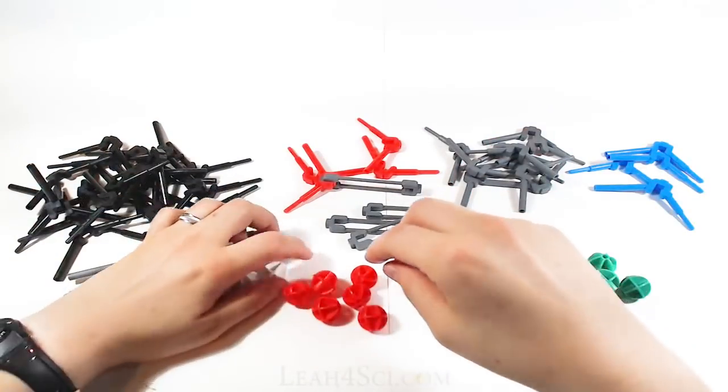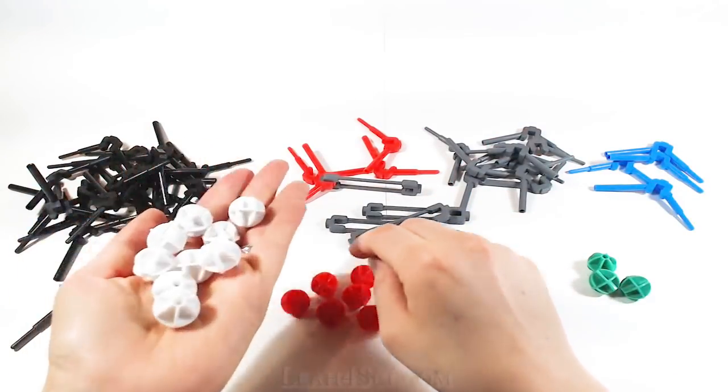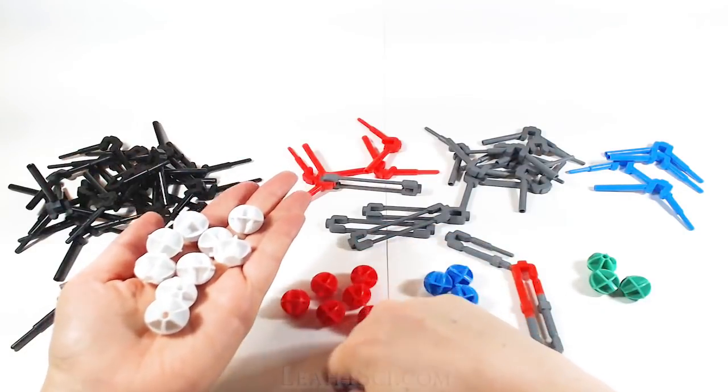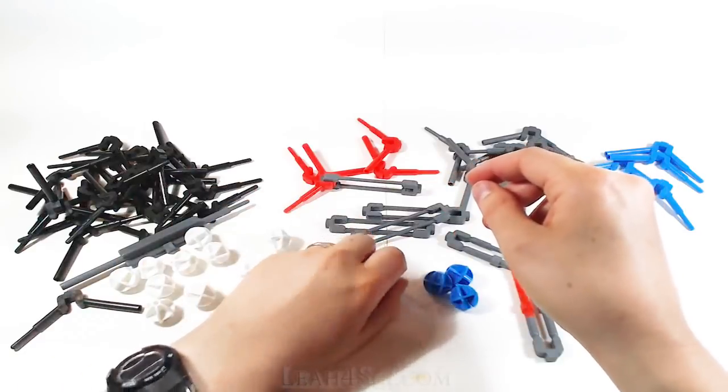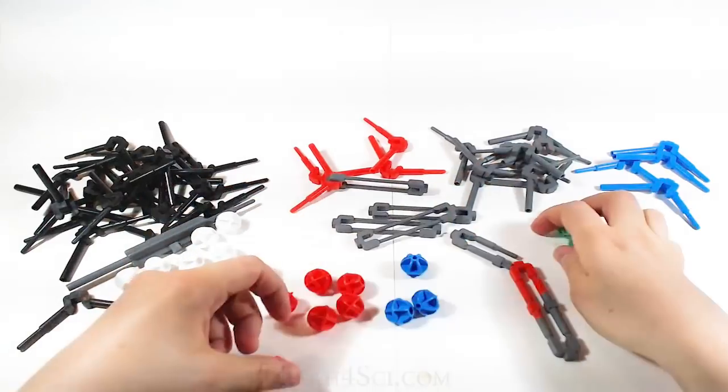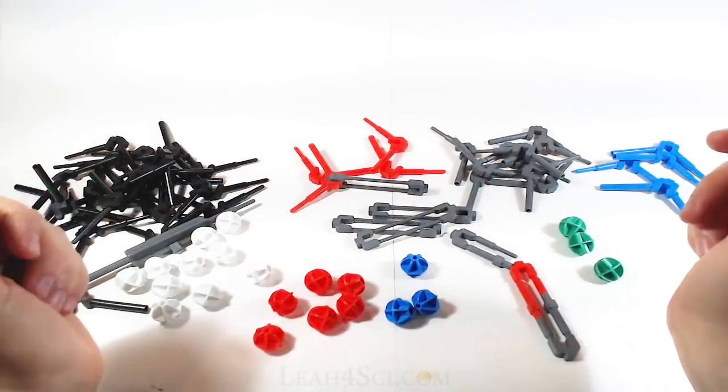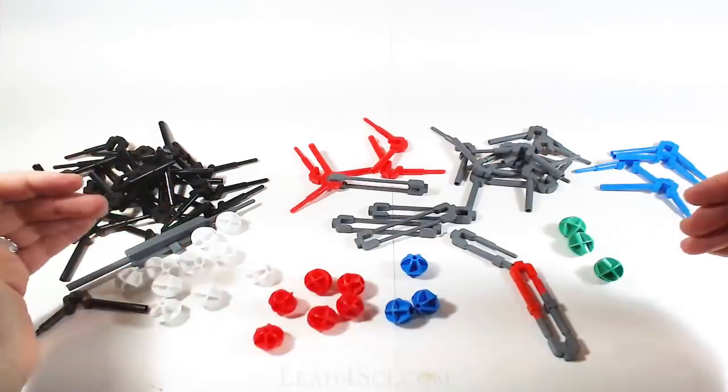And finally, we have the individual atoms. If we want to attach an atom to a structure, white is typically used for hydrogen, red for oxygen, and you could honestly do whatever you want with it. But it does help to have the four different colors.